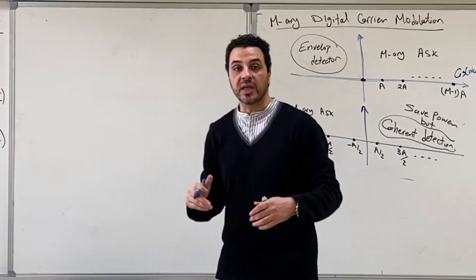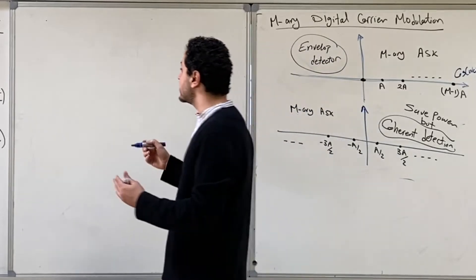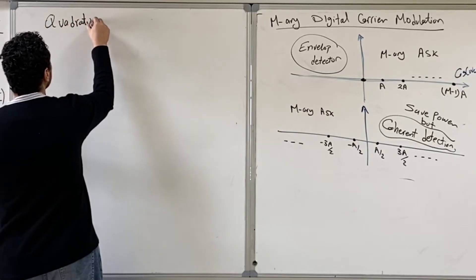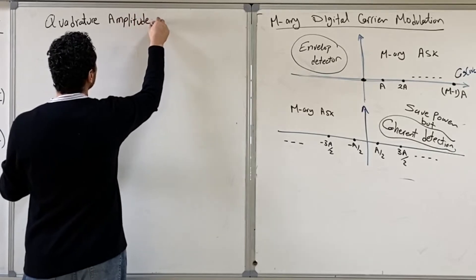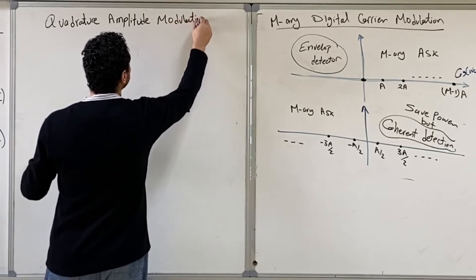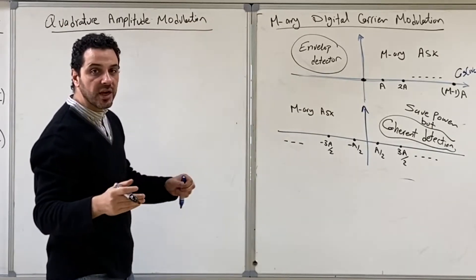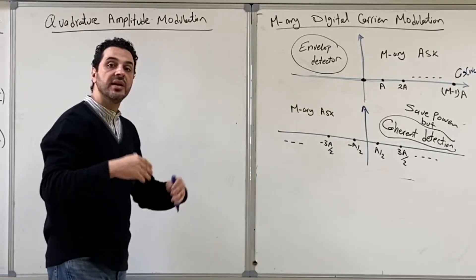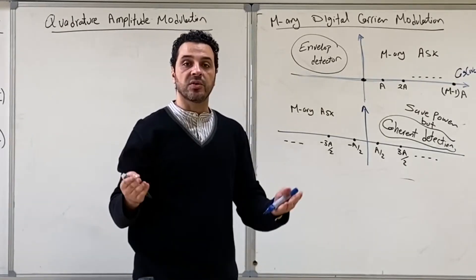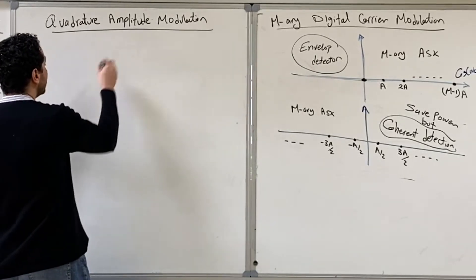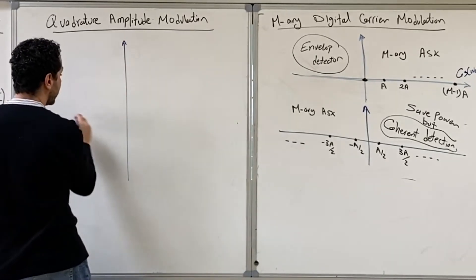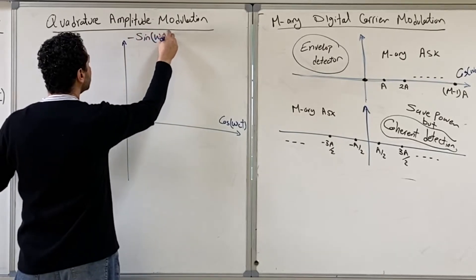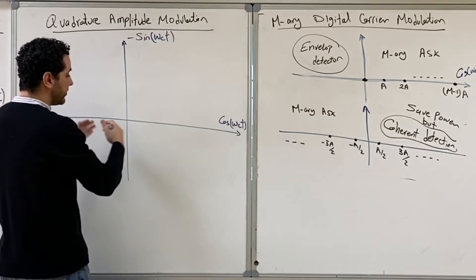Then they said: in order to be more efficient, why don't we use both dimensions? We can do something similar to the quadrature amplitude modulation that we studied in the analogue case. Since we have sine and cosine, and these two functions are orthogonal to each other, we can transmit some bits on the cosine direction and some other bits on the sine direction. The receiver will be able to separate them because cosine and sine are orthogonal. So we have these two directions: cosine(ωct) and minus sine(ωct).